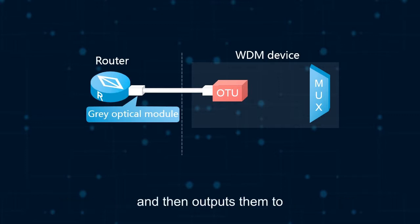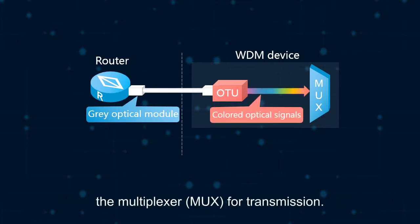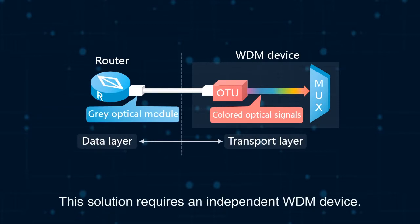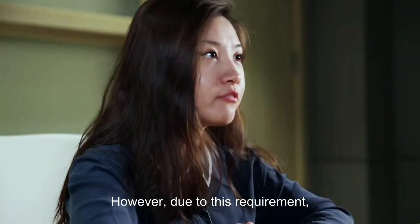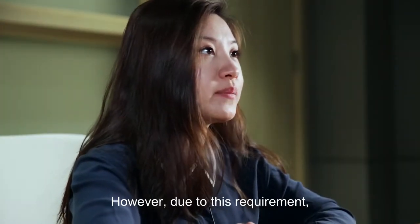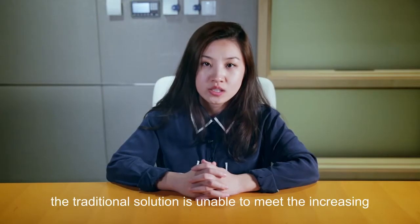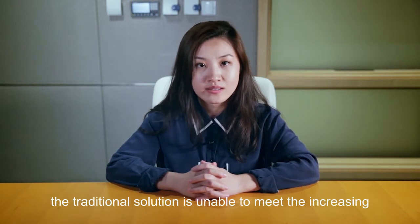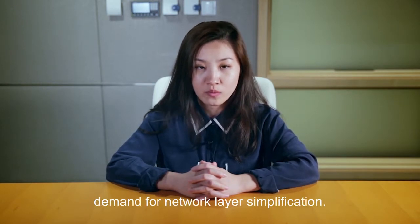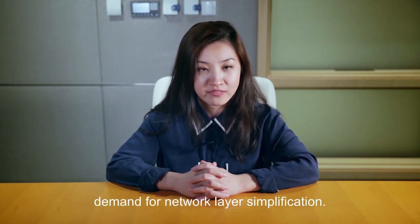The OTU converts the gray optical signals sent by the router into standard colored optical signals and then outputs them to the multiplexer, which is MUX, for transmission. This solution requires an independent WDM device. However, due to this requirement, the traditional solution is unable to meet the increasing demand for network layer simplification.